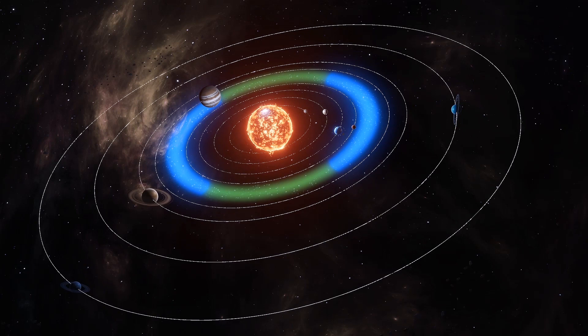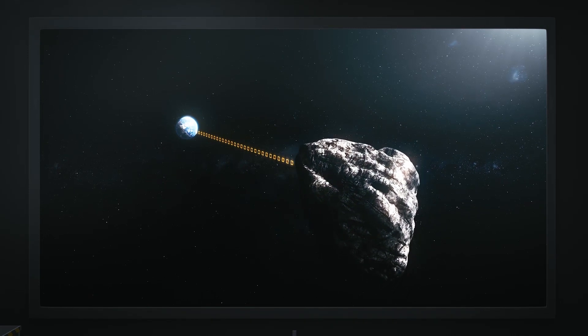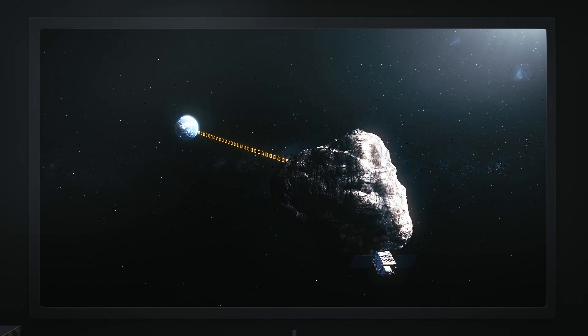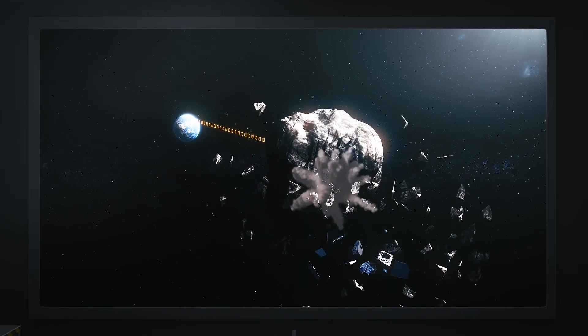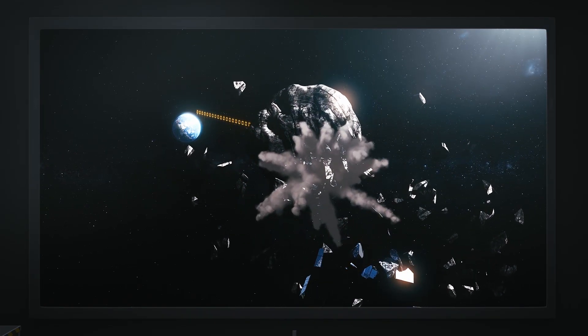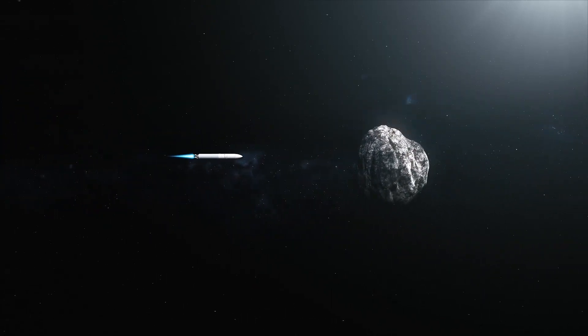In an ideal scenario, any asteroid would be dealt with in one of three ways. An explosive device could be detonated to break it into smaller chunks, lasers could be used to vaporize it, or a spacecraft could be sent to hit and change its trajectory. Each of these options, though, would take years to implement.